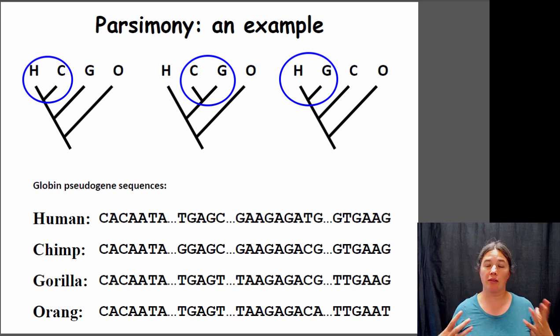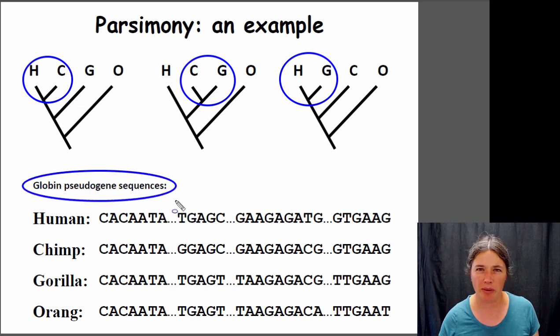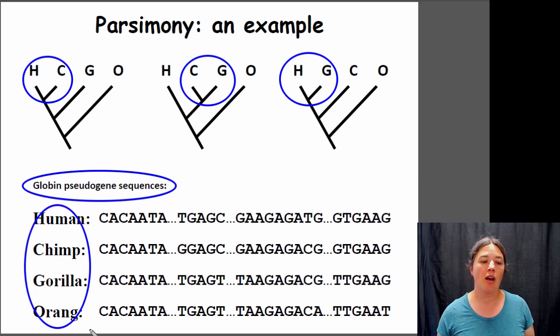To determine which tree has the best support, we're going to use some genetic data. We have globin pseudogene sequences. It doesn't really matter what that is; it's just some DNA that was sequenced for each of these species. Remember, orangutans are our outgroup, so we assume that they have the ancestral trait, and then we can look for shared derived traits within the ingroup.